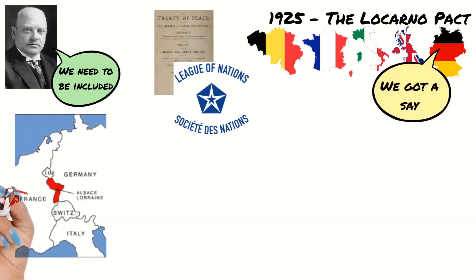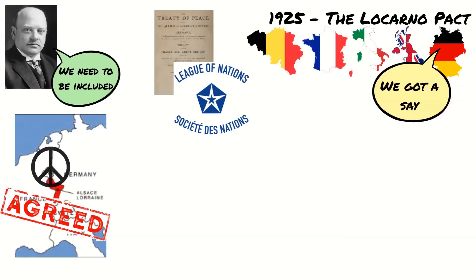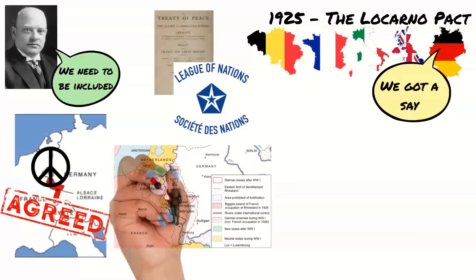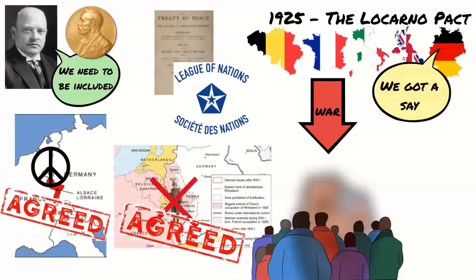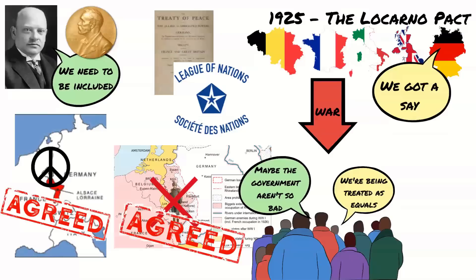Firstly, Germany agreed to the new border with France, giving up its claim to Alsace-Lorraine and promising to keep the peace on the border. Secondly, it agreed to the demilitarisation of the Rhineland. These terms were important because they made war with France much less likely. In fact, Stresemann was awarded the Nobel Prize for Peace in 1926 for preventing war. The people of Germany could see Germany being treated as an equal in these talks. This boosted support for the Weimar Republic because people could see that it would be able to restore Germany as an equal in the world.